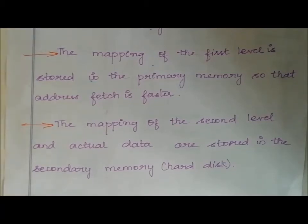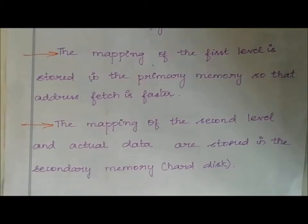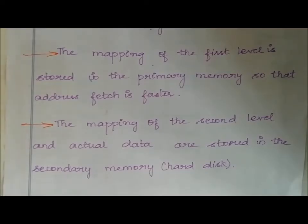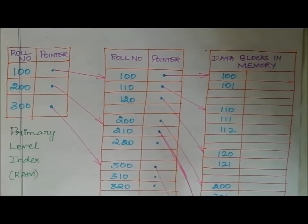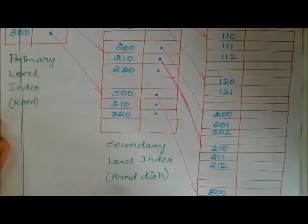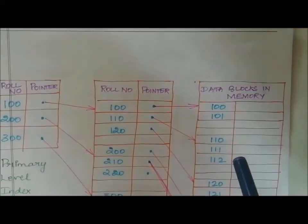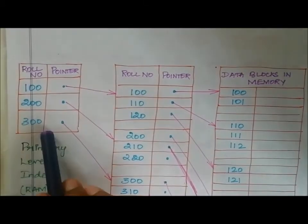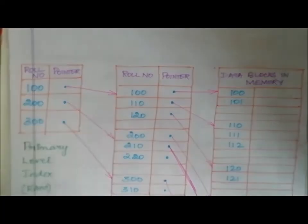That type of indexing is secondary index. The first level of indexing is in primary memory, and the second level indexing and actual data records are stored in the data blocks in secondary memory — hard disk. Secondary indexing divides the indexing into two different levels: first level and second level. Let's see the example for secondary indexing.